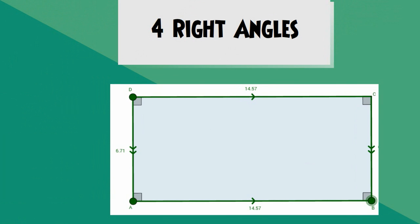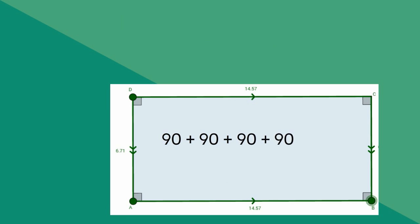In addition, a rectangle has four right angles and the sum of these interior angles add to 360 degrees.